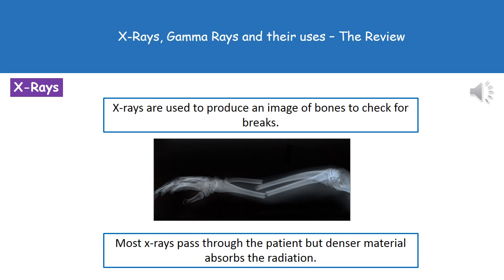Welcome to our review on x-rays, gamma rays and their uses. First, x-rays. Chances are you've had an x-ray in the past, and the reason is probably to check for a broken bone. Because the primary use of x-rays is to produce an image of bones so that we can check for breaks.